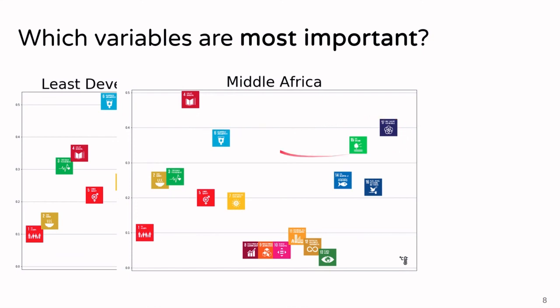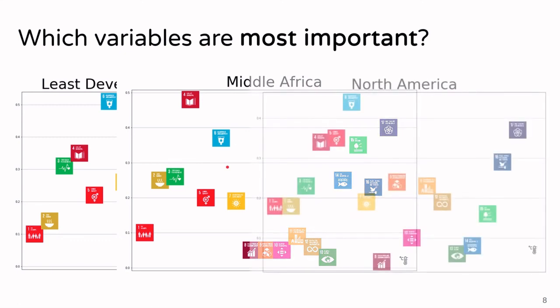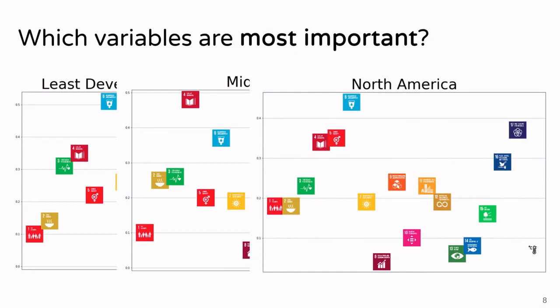For middle Africa we see a slightly different picture: quality education is number one, but partnerships for the goals and clean water and sanitation are also among the top three. As a third region, in north America, clean water and sanitation is again the most important node, but we also have partnerships and — notably — gender equality and education being closely related to each other, which for a developed region like North America is, I'd say, not the best result.